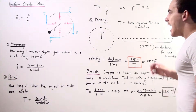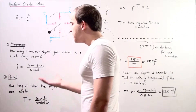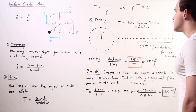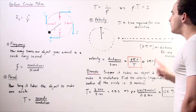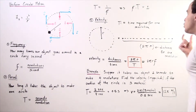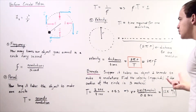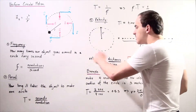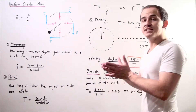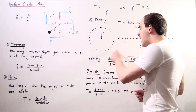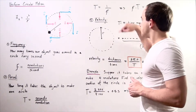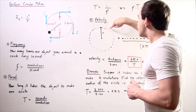How can frequency and period help us determine the velocity of our object? We define period T as the time required to make one full revolution. Recall that the magnitude of velocity, or speed, is equal to the distance traveled divided by time.